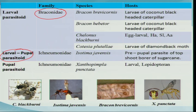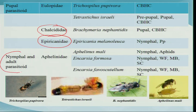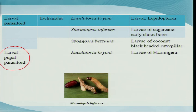The fourth group is the larval-pupal parasitoid, where eggs are laid on the larval stage but adults emerge when the host enters the pupal stage. The fifth category is the pupal parasitoid, which mainly attacks the pupal stage of the host — Chalcididae and Eupelmidae are examples. There are also nymphal and adult parasitoids that mainly attack hemipteran bugs at the nymphal and adult stages. Some dipteran groups also have larval-pupal parasitoids such as Sturmiopsis inferens, which is commonly used in biocontrol programs.